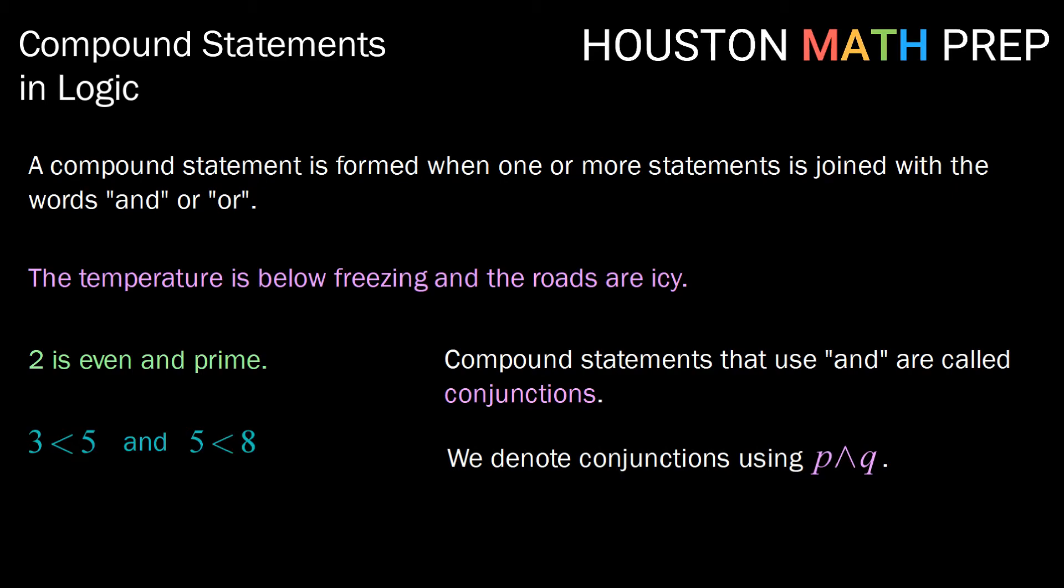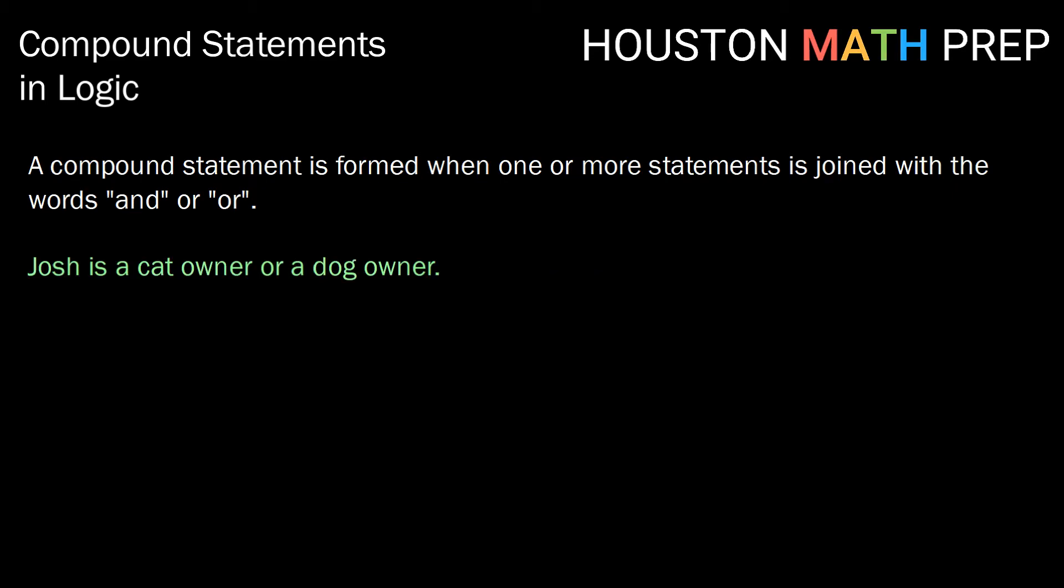Now let's talk about our other type of compound statement. Josh is a cat owner or a dog owner. Here are two statements. Josh is a cat owner and Josh is a dog owner are combined with the word or.